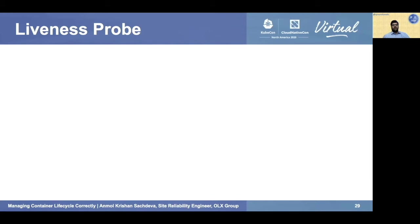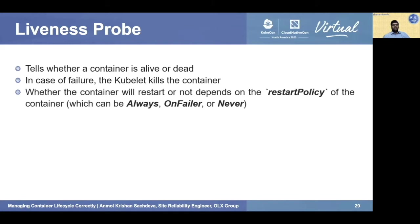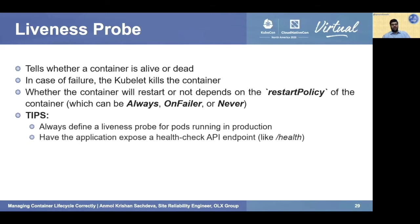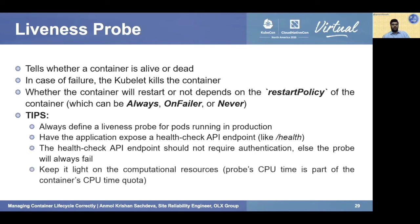There are three types of probes: liveness, readiness, and startup. The liveness probe identifies whether a container is alive or dead. On liveness probe failure, the kubelet kills and restarts the container, depending on the restart policy (always, never, or on-failure). Tips: always define a liveness probe for pods in production. Have the application expose a health check API such as /health — this API should not require any authentication, otherwise the probe will always fail. Keep it light on computational resources; probe CPU time counts against the container's CPU quota.